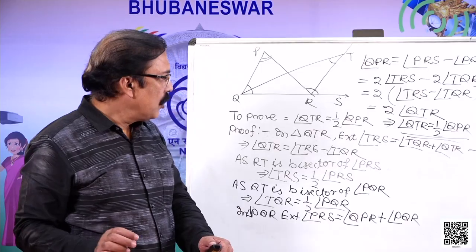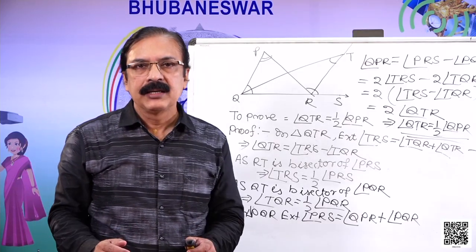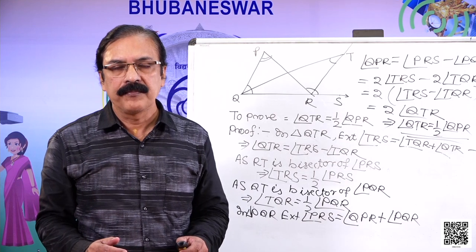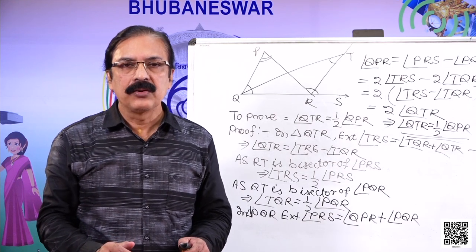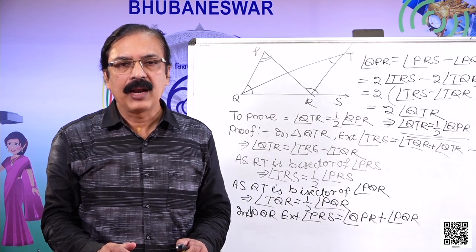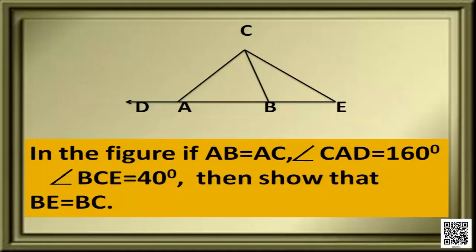Here also, we applied the exterior angle theorem. Let us have another look at another question. In the figure, if AB is equal to AC and angle CAD is equal to 160 degrees, angle BCE is equal to 40 degrees, then show that BE is equal to BC.